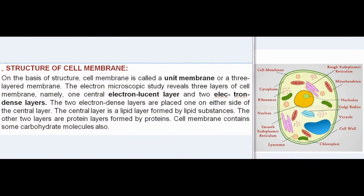On the basis of structure, cell membrane is called a unit membrane or a three-layered membrane. Electron microscopic study reveals three layers: one central electron-lucent layer and two electron-dense layers placed on either side of the central layer. The central layer is a lipid layer, and the other two layers are protein layers. Cell membrane also contains some carbohydrate molecules.